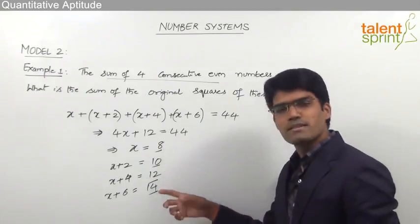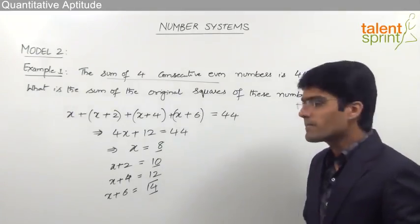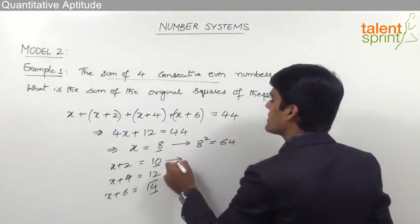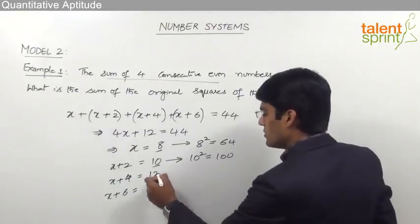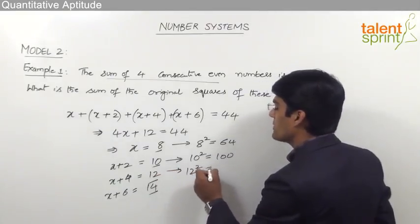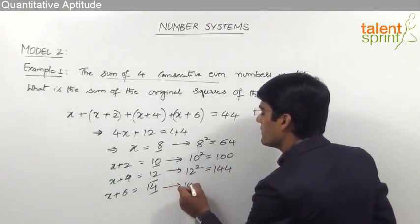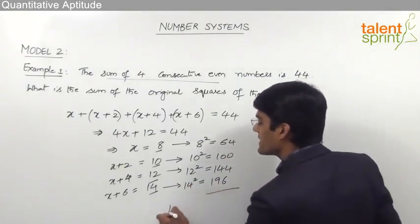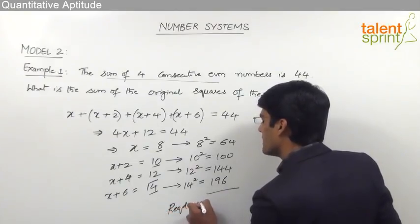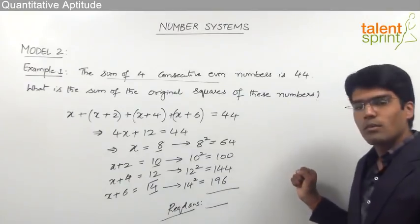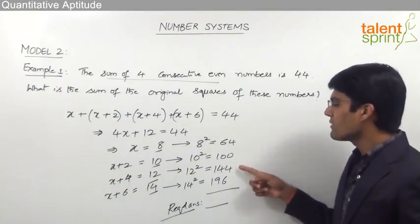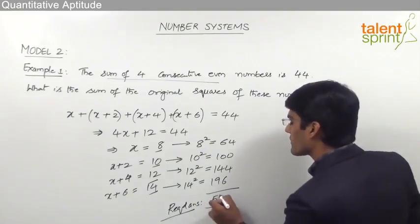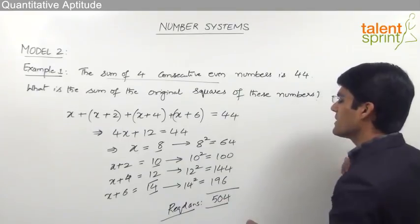We need to find the sum of the squares of these numbers. 8² = 64, 10² = 100, 12² = 144, and 14² = 196. The sum is 64 + 100 + 144 + 196 = 504. So the answer for this question is 504.